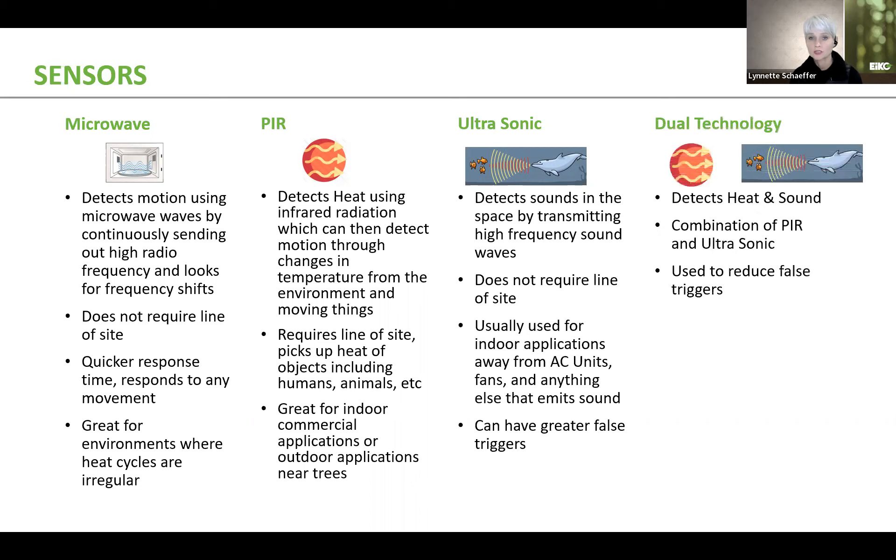And then the last one, as you can imagine, is dual technology. And that is basically a combination of PIR and ultrasonic, and it detects both heat and sound. The reason that people like using dual technology is because it reduces false triggers. You basically have to have both sound and also heat in the space in order for the sensor to actually be triggered.